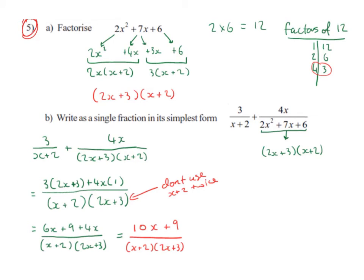It would be an easy mistake to say our common denominator is x plus 2 multiplied by 2x plus 3 multiplied by x plus 2. But we don't want to use the x plus 2 twice. So we only use it once, so this literally becomes our common denominator. So our common denominator is x plus 2 multiplied by 2x plus 3.